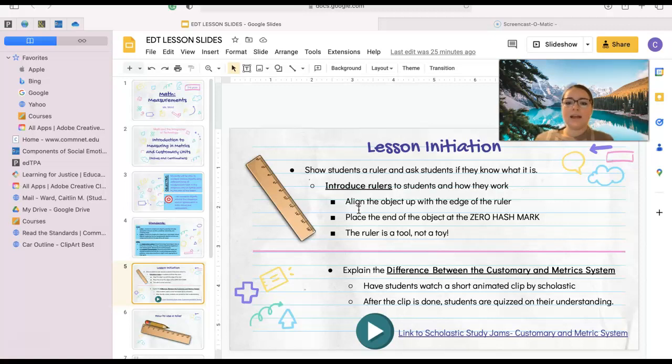When using a ruler, you're going to align the object with the edge of the ruler. You're going to place the end of the object at the zero hash mark. It's important that we place it at the zero hash mark and not the end of the ruler, that way our measurement is accurate. The ruler is a tool, not a toy. It is very important that we remember that and that we are being appropriate with our rulers and the tools that we are given.